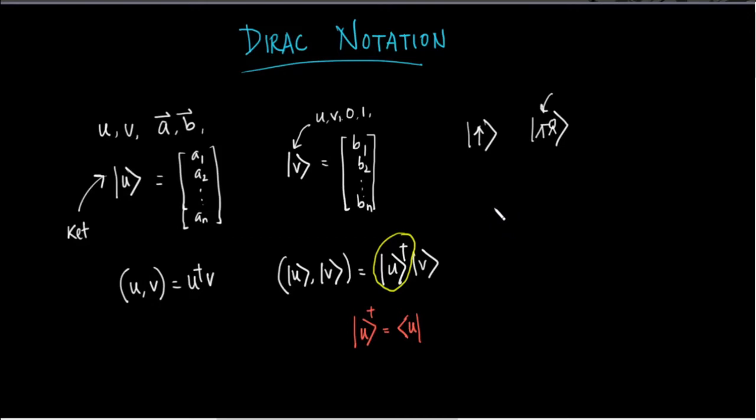Thinking simply, as we know, if we have a vector u that is like this: a1, dot dot dot, an, then we know that the dagger of that vector will be a row vector - a1 conjugate, dot dot dot, an conjugate. You can think of the notation like this: for column vectors we use kets, and for row vectors we use this notation. These are called bra vectors.